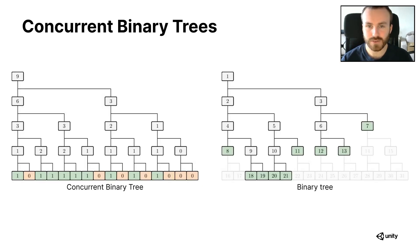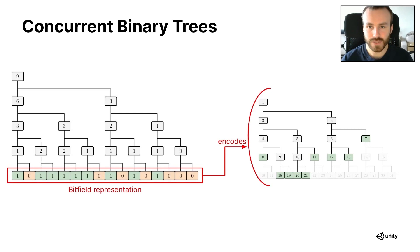So here's a concurrent binary tree on the left. It is an alternative representation of the binary tree on the right, and it's different from a regular binary tree in a couple significant ways. First, the last level of the concurrent binary tree is a bit field of ones and zeros that in itself encodes another binary tree fully. It does so by using ones to represent the presence of a leaf node, and a number of zeros after it represents its level in the binary tree.